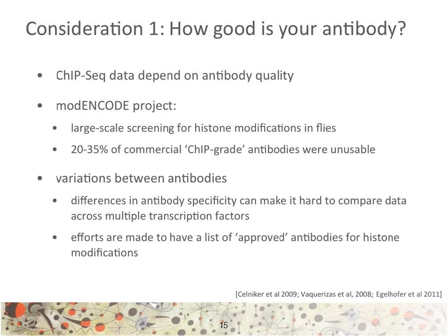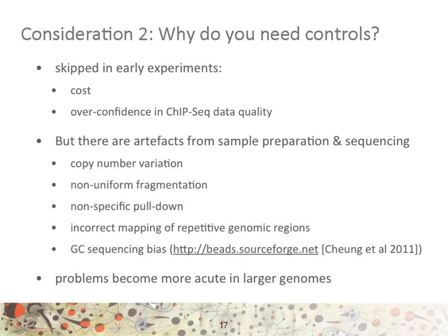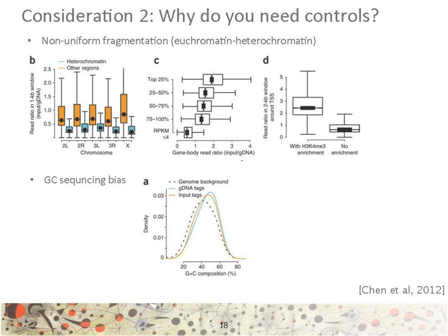When planning a ChIP-seq experiment, the first consideration should be about the antibody. The second consideration should be to identify the relevant controls, as described in these two slides. Still considering the need for controls, these slides present four graphs highlighting the need for controls.